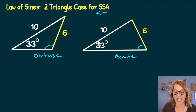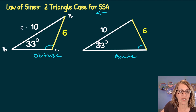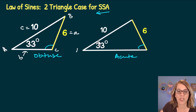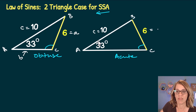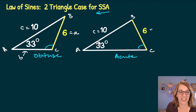Let's go ahead and label each of these angles so that we can start to solve. We're going to give capital letters to each of the vertices — A, B, and C — and then use lowercase letters for the lengths of the opposite sides. So 6 is opposite angle A and we are missing side b. We're going to start to find our missing angles and sides by using the Law of Sines.